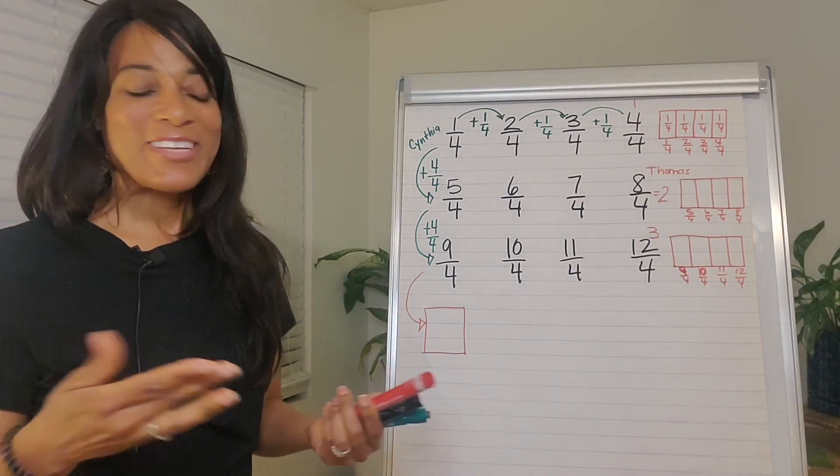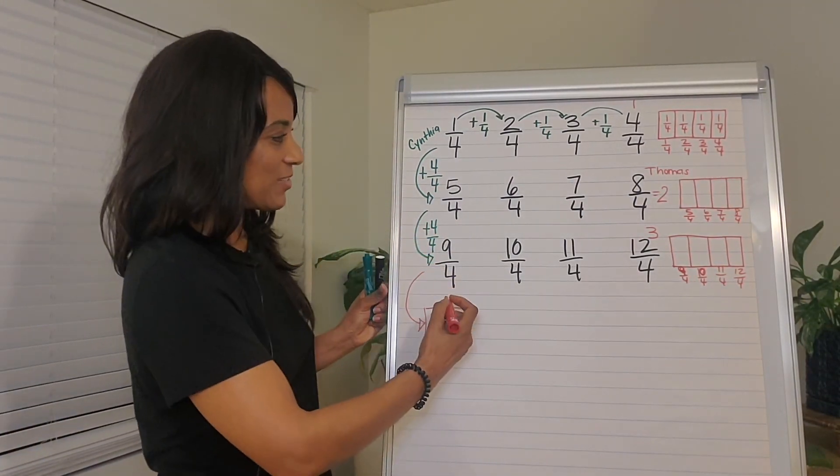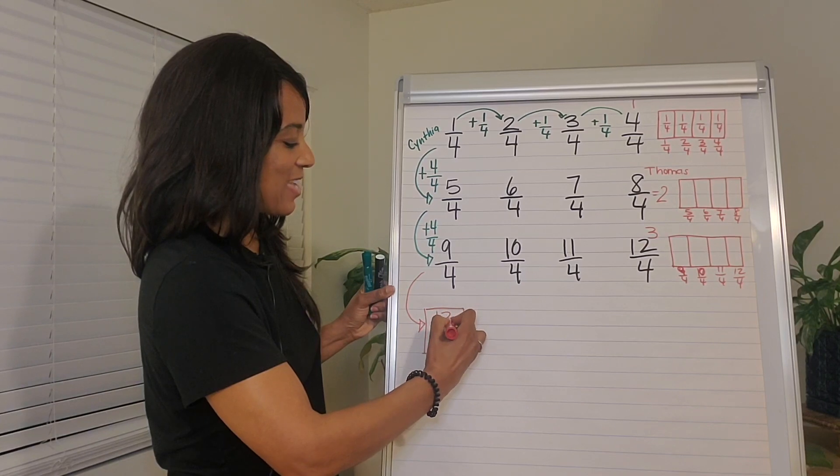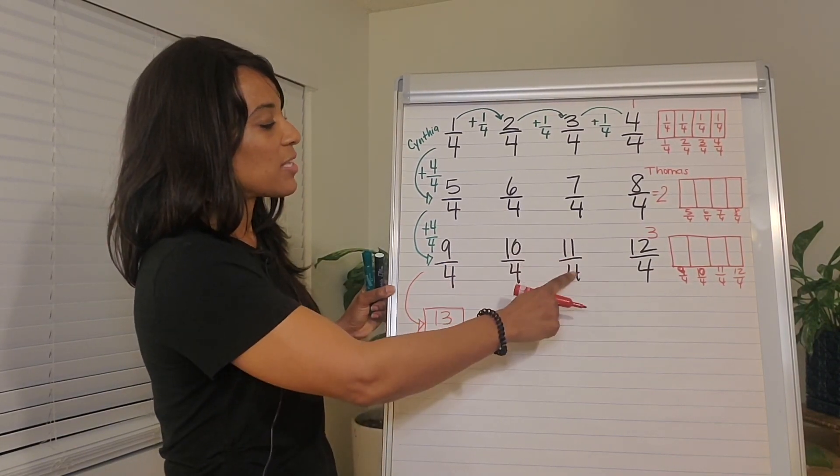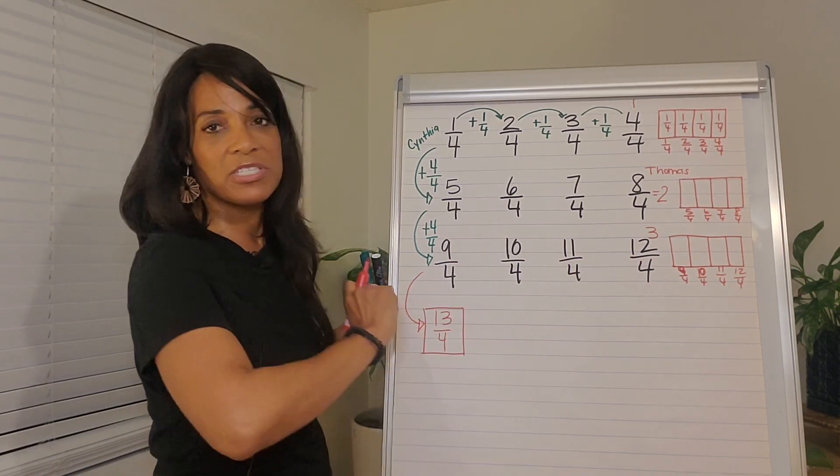So typically they'll realize that it's 13 fourths. And then we'll verify and make sure nine fourths, 10 fourths, 11 fourths, 12 fourths, 13 fourths.